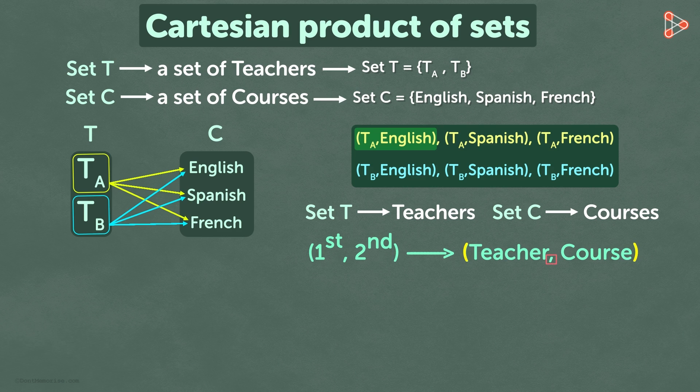Let's use lowercase t to represent a teacher and lowercase c to represent a course. So every entry in our list is of the form lowercase t comma lowercase c, where t belongs to the set of teachers T and c belongs to the set of courses C.